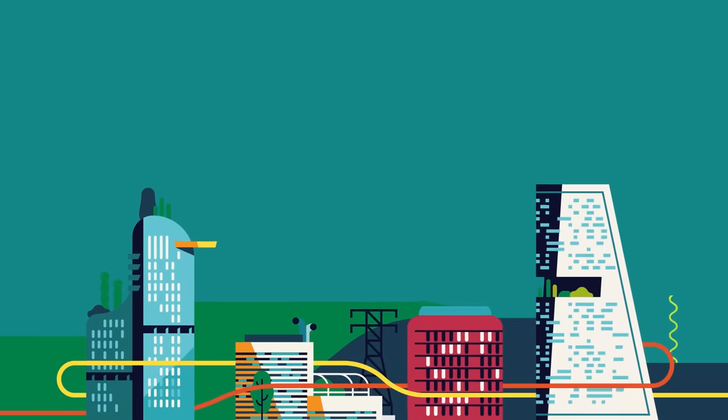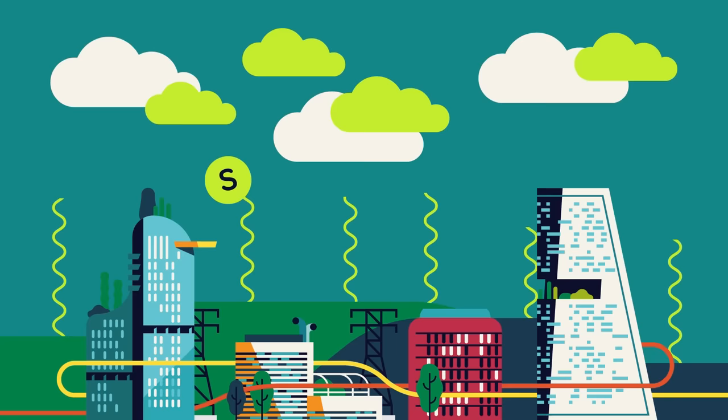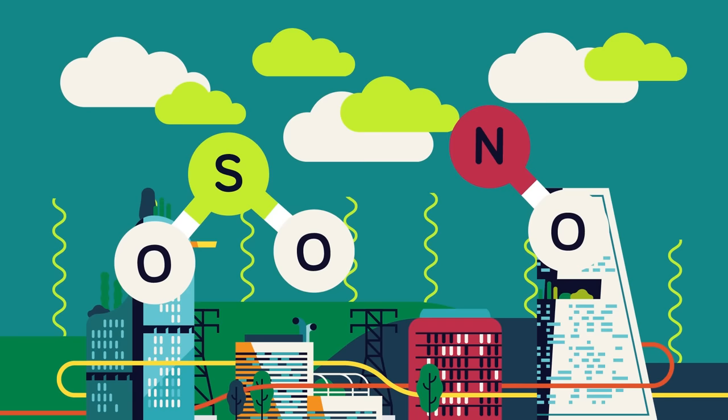When rain clouds form, they're not always made up of pure water. In some cases, a chemical reaction takes place with compounds such as sulfur dioxide and nitrogen oxide that are released into the air. These gases can rise high into the atmosphere, and when they mix and react with water and oxygen, they fall to the earth as what we know as acid rain.